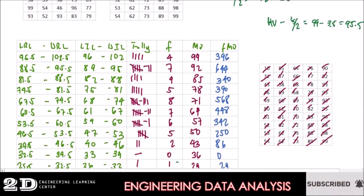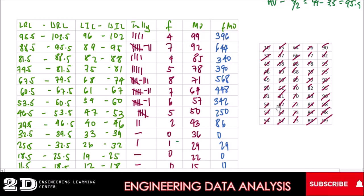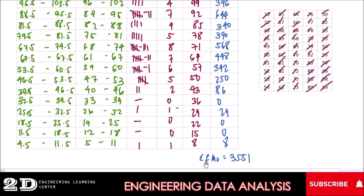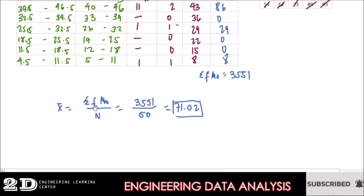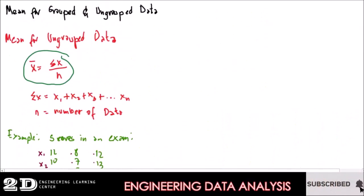From a previous topic, we discussed how to get the lower real limit, upper real limit, interval limits, tally, frequency, and midpoint. Now we add a new column: frequency times the midpoint. You simply multiply the midpoint by the frequency — for example, 99 times 4 equals 396, and so on. The summation of all frequency-times-midpoint values is 3,551. Using the formula — summation of frequency times midpoint divided by total number of data — our mean is 3,551 divided by 50, which equals 71.02.